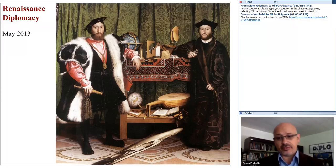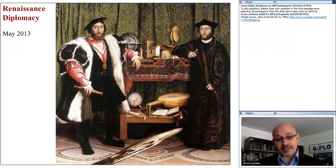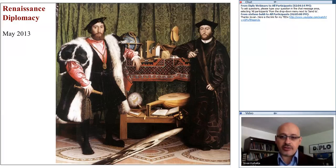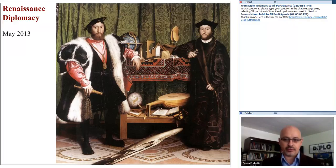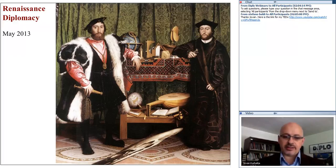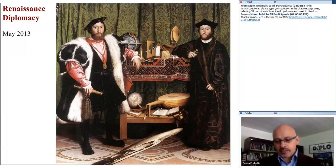We are starting our presentation with the famous painting 'The Ambassadors' by Holbein. I suggest that next time you go to visit London, definitely go to the National Gallery — you will see the painting there. This painting has many interesting artistic and historical elements but is also highly relevant for diplomacy. You can see two ambassadors: Jean de Dinteville on the left and Georges de Selve on the right, posing for Holbein's painting.